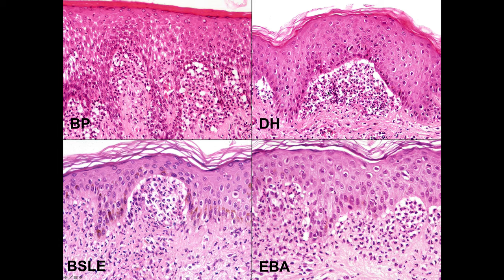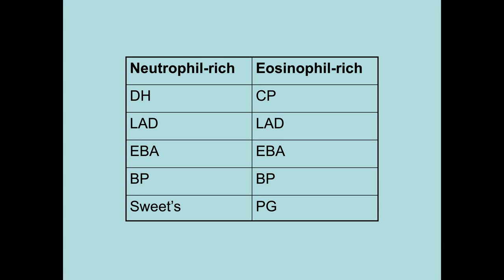Histological overlap is therefore problematic. Linear IgA disease can be both neutrophil-rich and eosinophil-rich. EBA can do both. Bullous pemphigoid can do both. So histology alone is a problem.